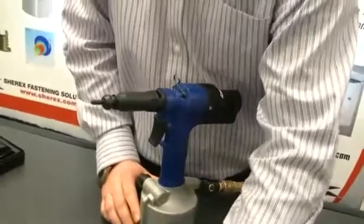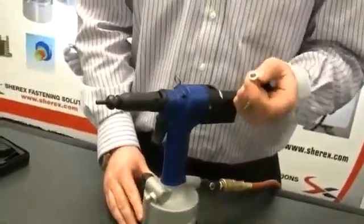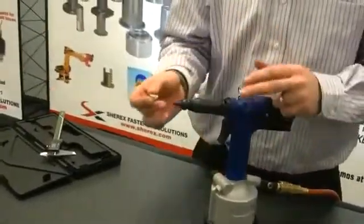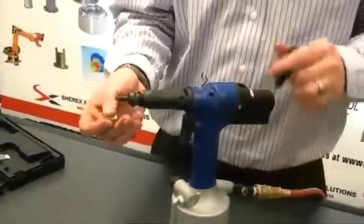To determine the proper pulling distance for a rivet nut, we measure what is called the installed length of the rivet nut. So, what we will do is install a rivet nut into a base material and measure the height of the back of the rivet nut.